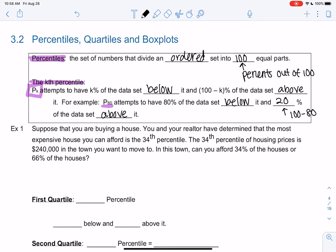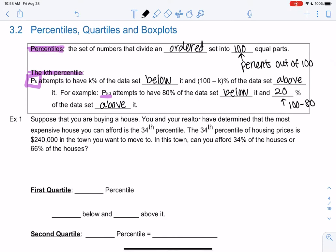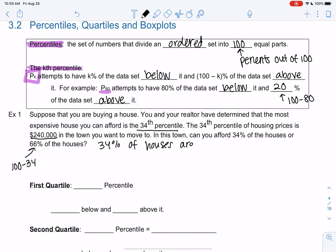Suppose you are buying a house. You and your realtor have determined that the most expensive house you can afford is the 34th percentile, which happens to be $240,000. Maybe not in the Bay Area, but somewhere. In this town, can you afford 34% of the houses, or can you afford 66%? 66 is 100 minus 34. So 34th percentile means 34% of the houses are below $240,000. You can only afford $240,000 or less, so you can only afford 34% of the houses.